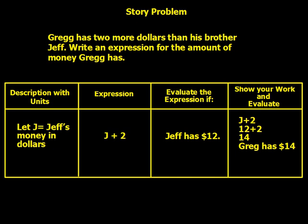Story problem: Greg has two more dollars than his brother Jeff. Write an expression for the amount of money Greg has. Description with units: let J equal Jeff's money in dollars. The expression is J plus 2, because Greg has two more dollars. If we know that Jeff has twelve dollars, we set up: J plus 2 equals twelve plus 2 equals fourteen. Greg has fourteen dollars.